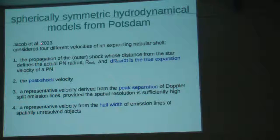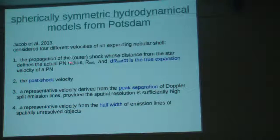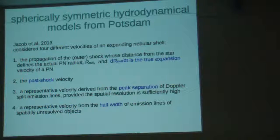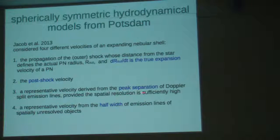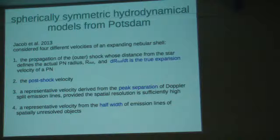In a very recent paper, they consider four different velocities of an expanding nebular shell which should be taken into account when talking about expansion velocities: the propagation of the outer shock, which is the derivative of the outer shock wave over time — the true expansion of the planetary nebula shell; the post-shock velocity, which can be measured from spectroscopy; the peak separation of split emission lines when you have enough spectral and spatial resolution; and if we don't have enough resolution, we can always measure the half-width of unresolved lines. The last two are contained in tables like those also in the Weinberger catalog.